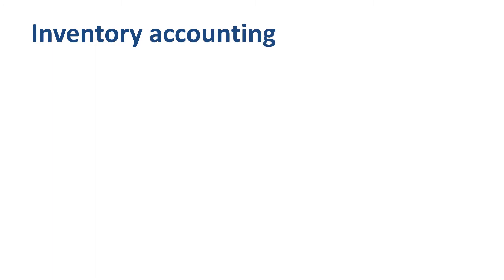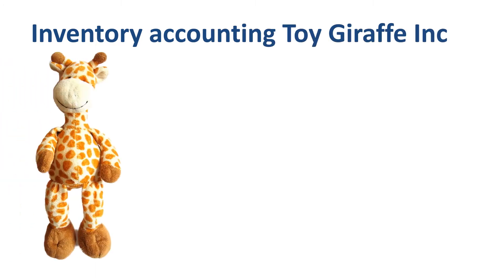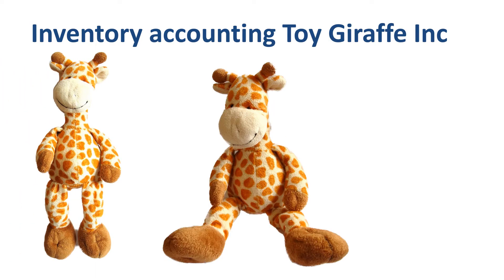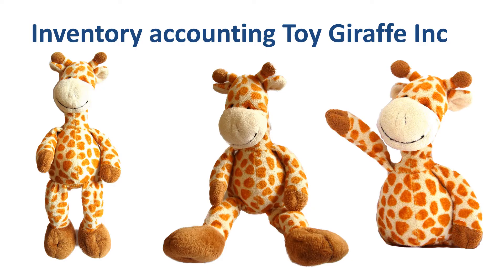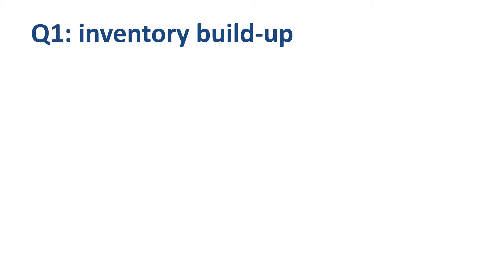Let's work through a visual as well as a numerical example of FIFO versus LIFO. We will do the inventory accounting for a hypothetical company called Toy Giraffe Inc. As the name suggests, this is a company buying and selling toy giraffes. In the first quarter of the year, Toy Giraffe Inc. is building up its inventory.